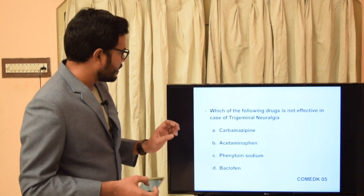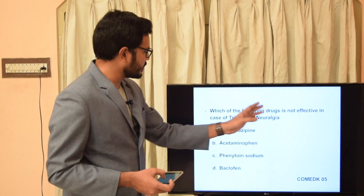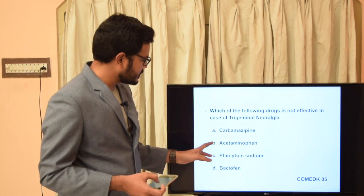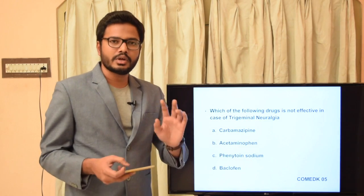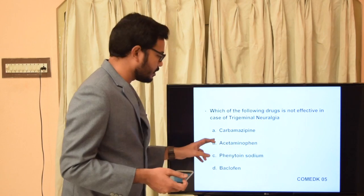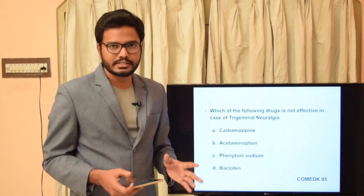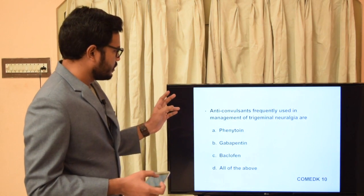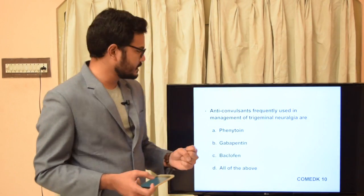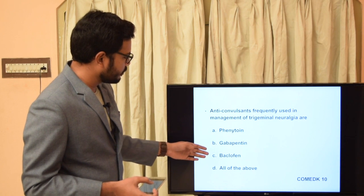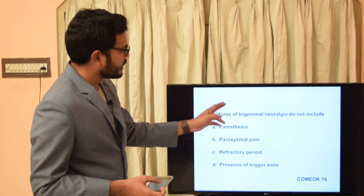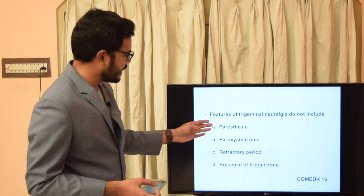MCQ: Which drug is NOT effective in trigeminal neuralgia? Carbamazepine, acetaminophen, phenytoin, or baclofen. The answer is acetaminophen — carbamazepine, phenytoin, and baclofen are all anti-convulsants effective in managing the condition, but NSAIDs and acetaminophen are not effective given the intensity of pain. MCQ (Comet 2010): Anti-convulsants used include phenytoin, gabapentin, baclofen — all of the above — and all are correct.